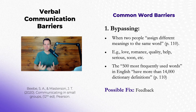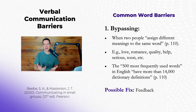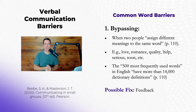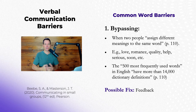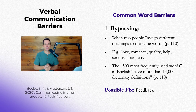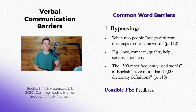If somebody says something to you and maybe it's a little ambiguous, you can double check it with them — ask them, is this what you mean? And you can do the same if you're the one speaking; you want to ask a question to see if they're understanding. So a little back-and-forth feedback, just for a few moments, can really make sure you avoid this bypassing word barrier.